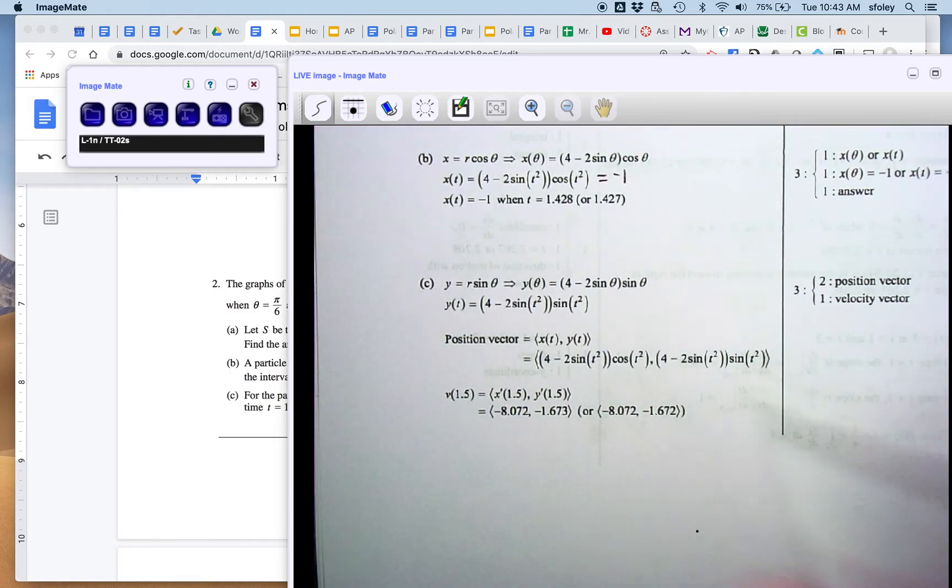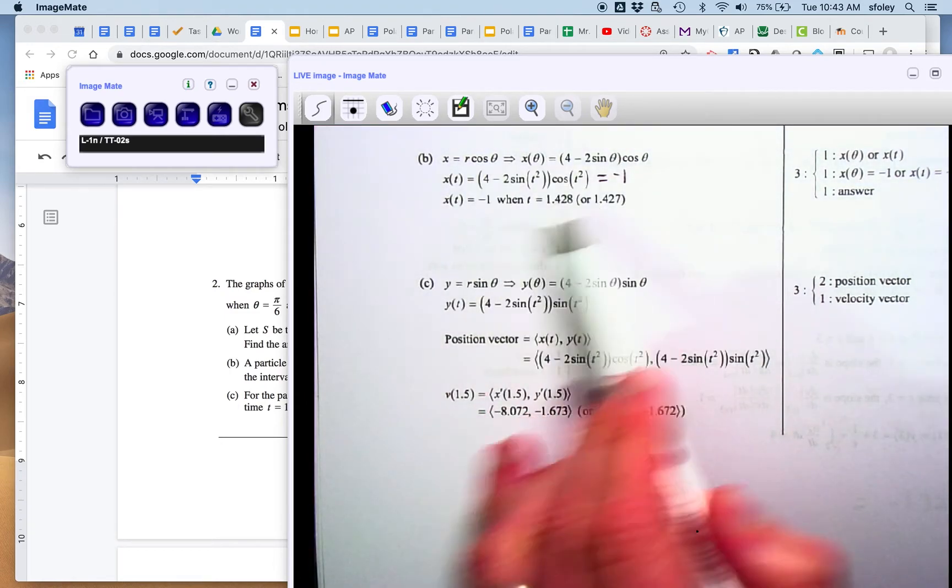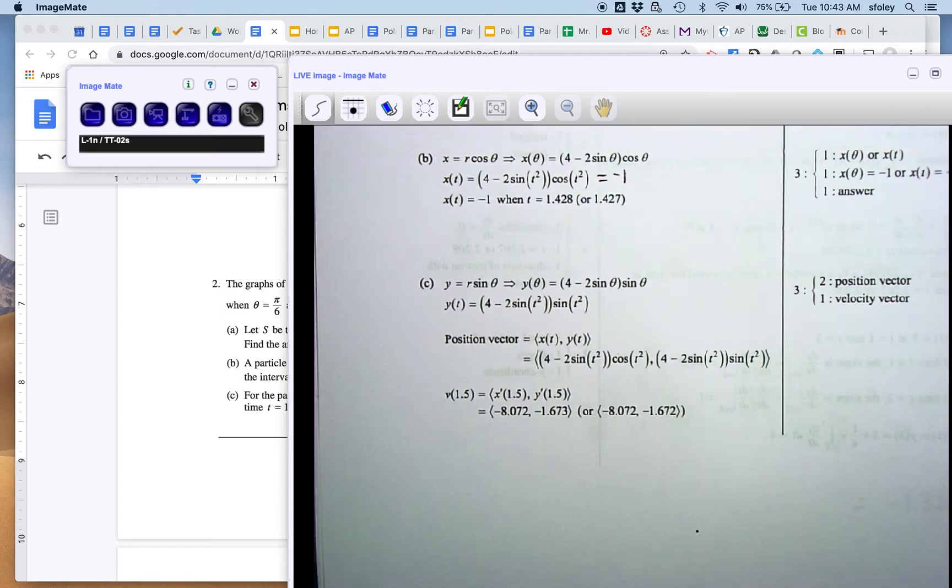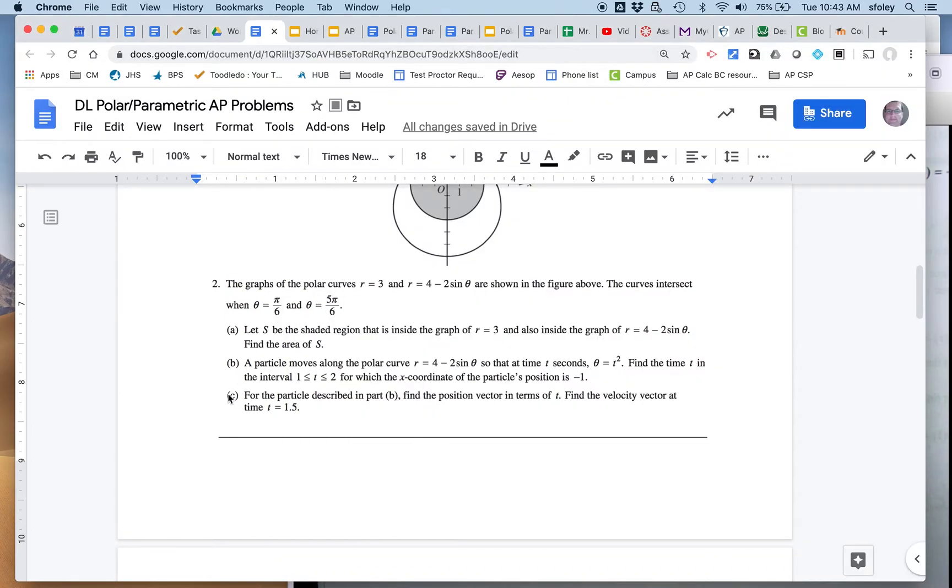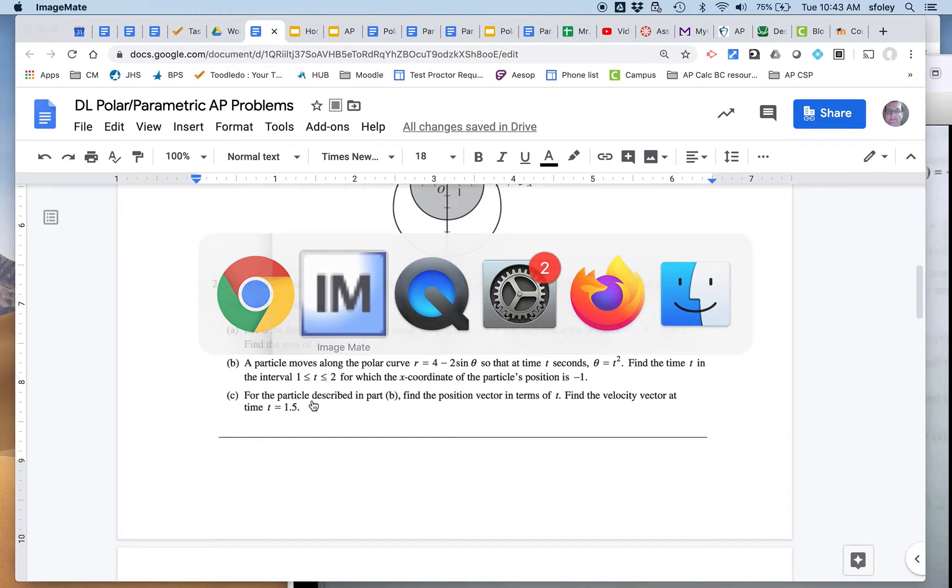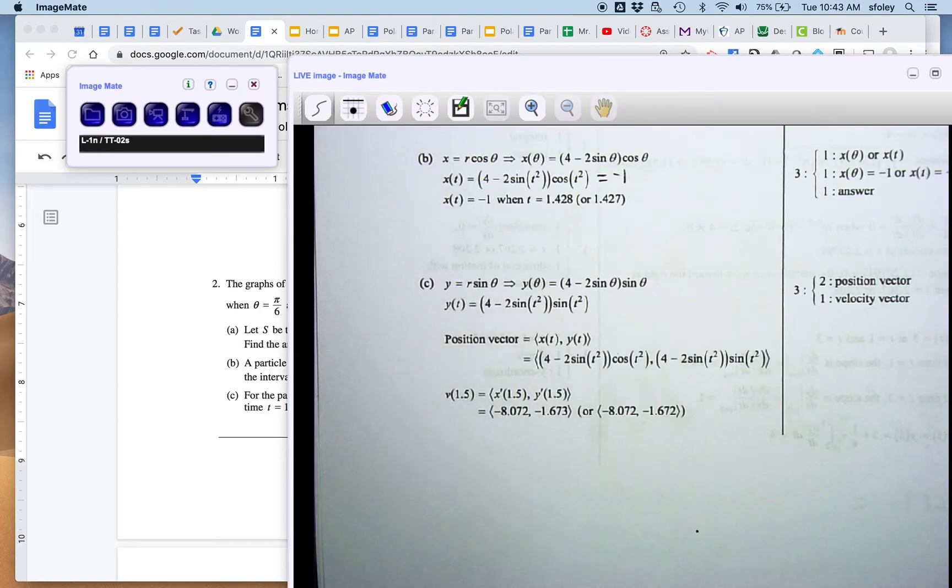And then we set this whole thing equal to negative 1, basically. And again, lots of calculator stuff here. We need to solve this equation. And they told us we were just looking for the interval from 1 to 2. And so presumably this equation has lots of answers, but we're just looking for the answer between 1 and 2, and it's about 1.4.